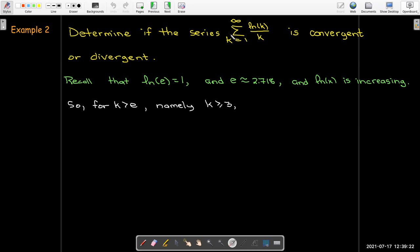That means if k is bigger than the base e, so in this case, k being bigger than or equal to 3 because k is an integer, then we can say that the natural log of k is going to be bigger than 1, which means that natural log of k over k is going to be bigger than 1 over k itself.